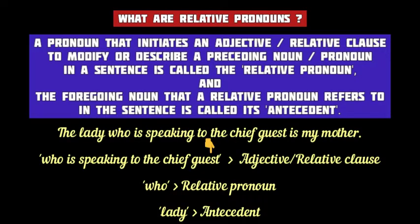Now that we have understood the concept of pronouns, let's learn relative pronouns. A relative pronoun introduces an adjective or relative clause and comes immediately after a noun in a sentence. In other words, a relative pronoun initiates a relative clause that modifies or describes a preceding noun or pronoun. The noun that a relative pronoun follows or refers to in the sentence is called its antecedent.